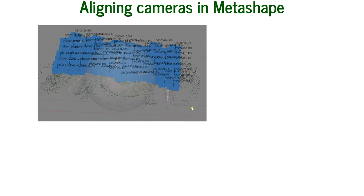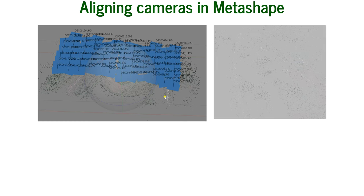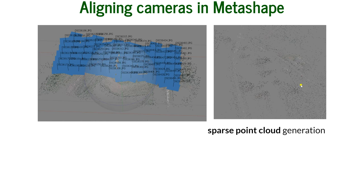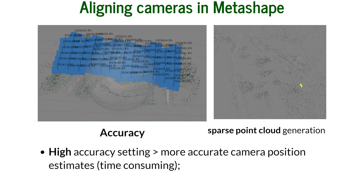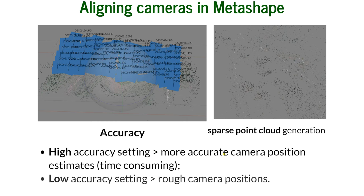Here you can see the aligned photos in Metashape — the lines represent the normal to the image plane showing how they were aligned together, and underneath you can see the sparse point cloud. When you disable the cameras, you can see the tie points clearly. There are different accuracy settings: the high accuracy setting requires more computational space and time but renders more accurate camera position estimates, while the low accuracy setting gives you only rough camera positions.